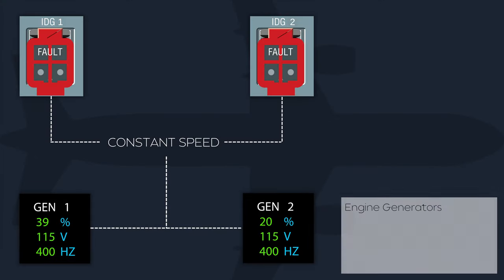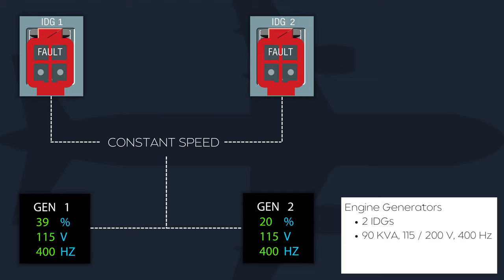The electrical system is normally powered by two engine-driven integrated drive generators or IDGs. The generator is driven at a constant speed by the integrated drive to supply the electrical system with up to 90 kVA of power at 115 and 200 volts, with a frequency of 400 hertz. The 115 volts supply powers normal electrical components, with 200 volts supplying higher load components such as hydraulic pumps.